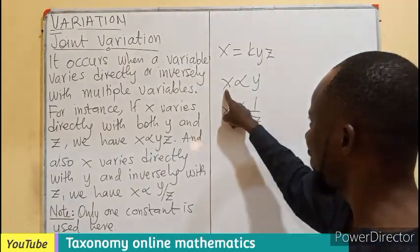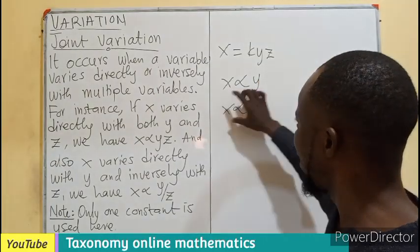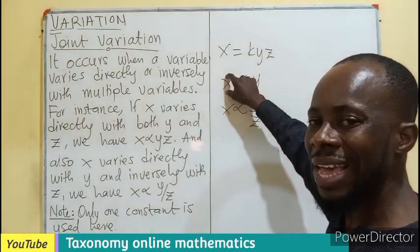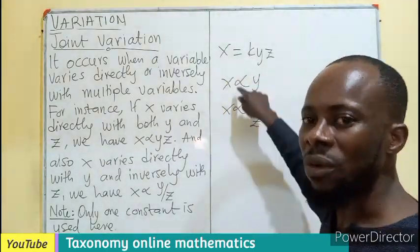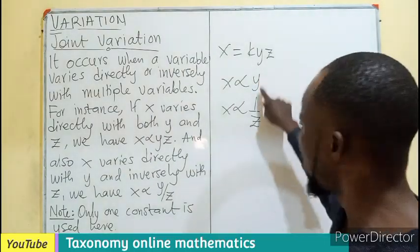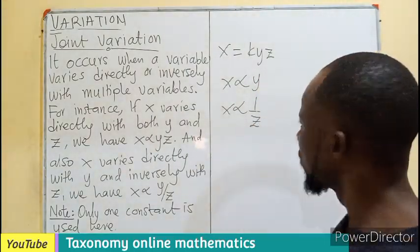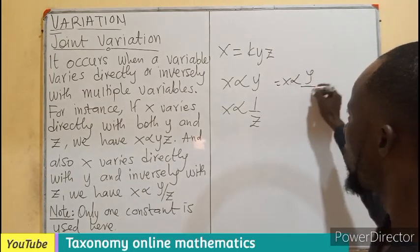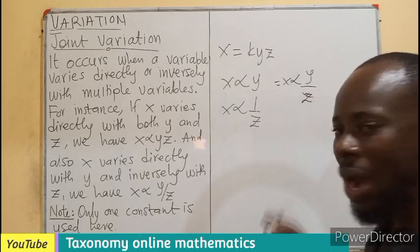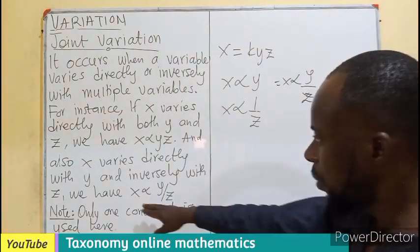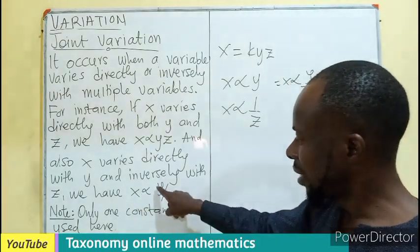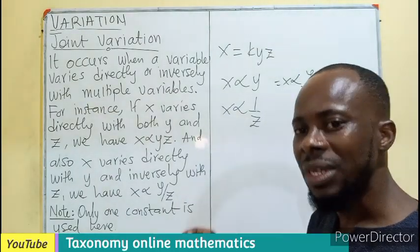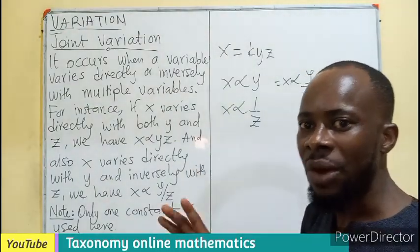So it is the same X that is varying directly and the same X is varying inversely. Combining the two together to mean the same X and the same constant of variation, Y will multiply the one over Z to give us X varies as Y over Z, or Y divided by Z. So that is a joint variation, combining direct with inverse variation.